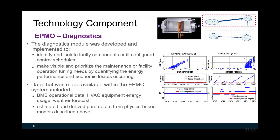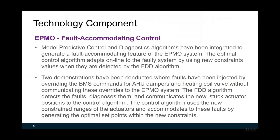For a faulty VAV box, we can see the room temperature was not maintained. At the same time, our algorithms were able to pick up this anomaly with a high anomaly score. Data made available within the APMO system includes building management system operation data, HVAC equipment energy usage, and weather forecasting. Both estimated and derived parameters from physical-based models described in the previous slides are also available within the APMO system.